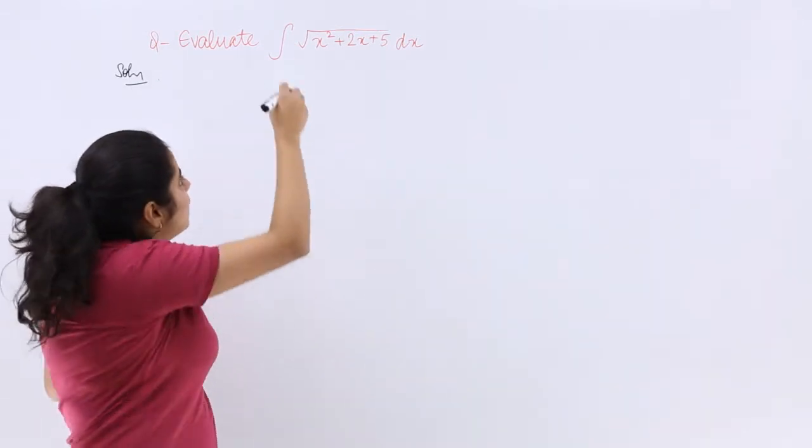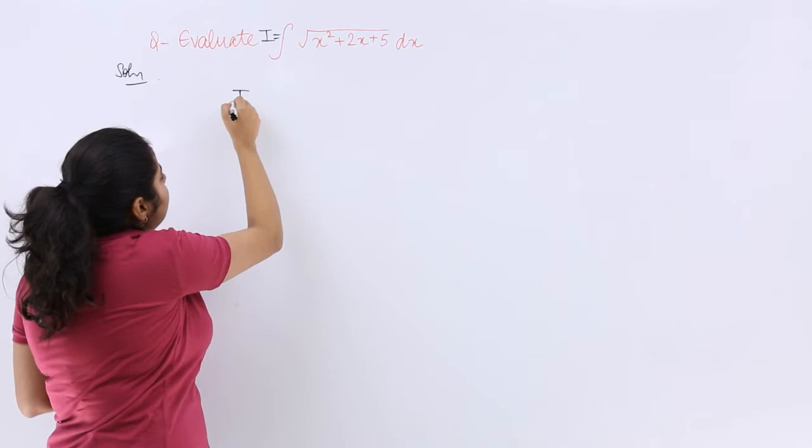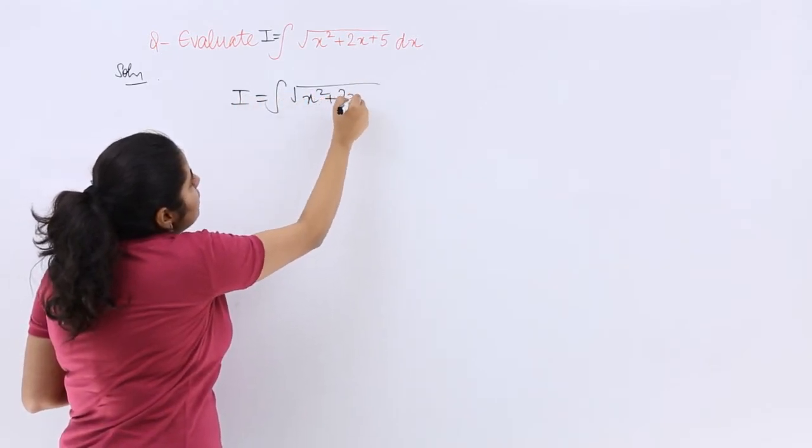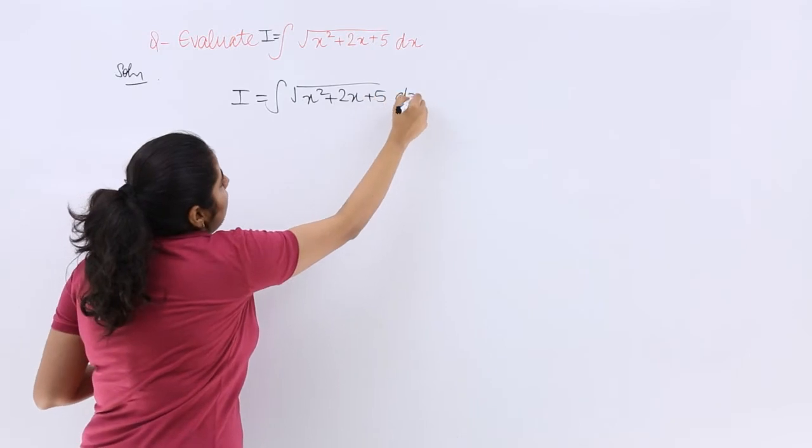If the given question is I, then I have to evaluate I equals the integral of square root of (x² + 2x + 5) dx.